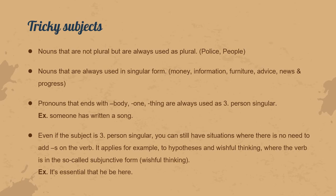There are sometimes nouns that are not plural, but we always use them as plural, and therefore when we use a verb with them, it takes the plural form — for example, 'police' and 'people'. You cannot say 'people is talking'; it's always 'people are talking'.